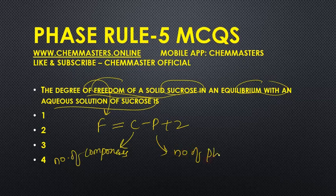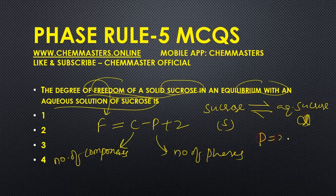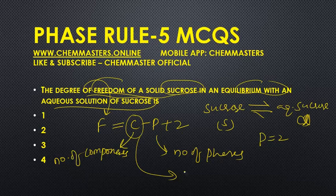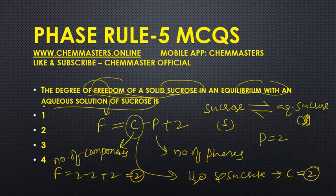We are given that solid sucrose is in equilibrium with aqueous sucrose. Here we have two phases: one is solid and one is liquid, so P = 2. Now for the number of components — the independent chemical species present in the system — we have water and sucrose, so C = 2. Substituting into the equation: F = 2 - 2 + 2, giving us a degree of freedom equal to 2.